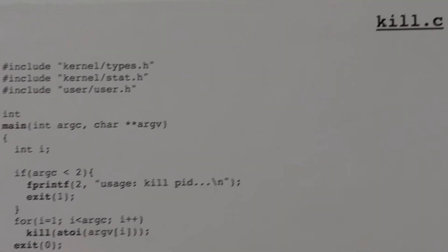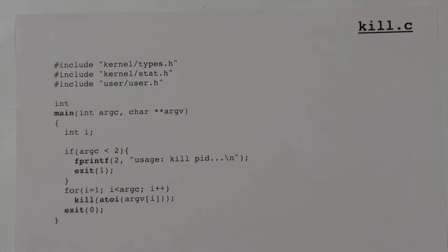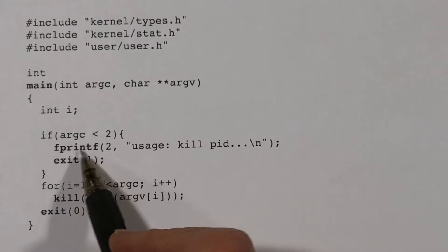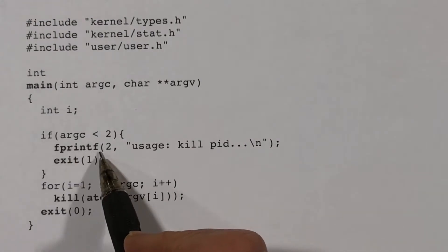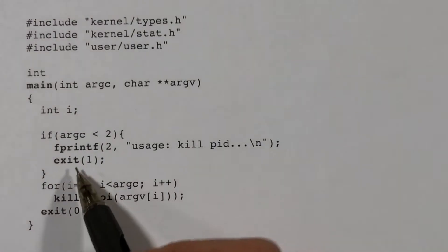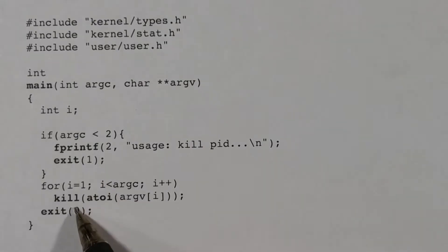Here is the code for kill. It is a command that I'm sure you're familiar with. We see that it makes calls to some library functions. fprintf and a2i are used here. It also makes some calls to exit and kill, which are system calls.